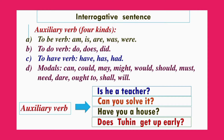Number four: modal auxiliary — can, could, may, might, would, should, must, need, dare, ought to, shall, will. These are the modal auxiliary verbs.